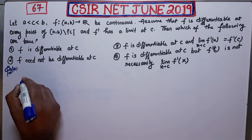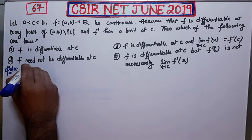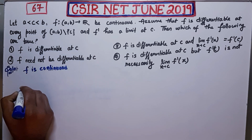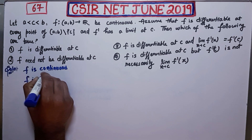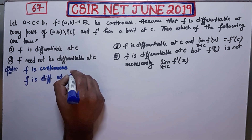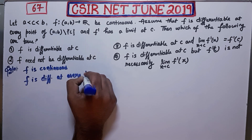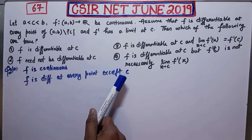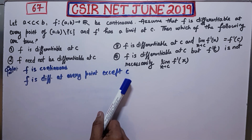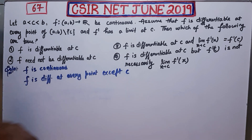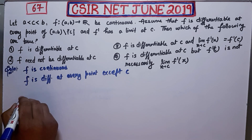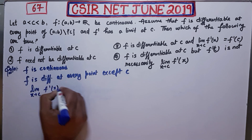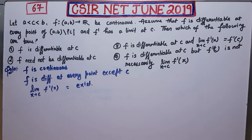Writing out what is given: F is continuous. F is differentiable at every point except the point C — it doesn't mean it is not differentiable at C, it means you need to check. And the last condition given is that the limit as X goes to C of F dash X exists.